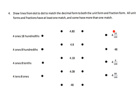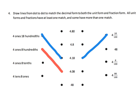It's a great way to match your unit form, decimal form, and fraction form using the same numbers to force thinking. Four ones and eighteen hundredths goes right here. Then four ones and eight hundredths goes right here — written as four point zero eight.